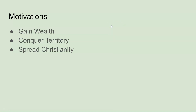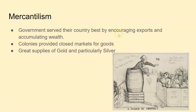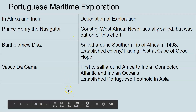Motivations included gaining wealth, conquering territory, and spreading Christianity — God, King, and gold. A lot of this was driven by mercantilism, an economic system and predecessor to capitalism. The idea was that government served its country best by encouraging exports and accumulating wealth in the form of gold and silver. Colonies provided closed markets for goods, sources of raw materials, and in the case of Spanish colonies, great supplies of gold and especially silver.